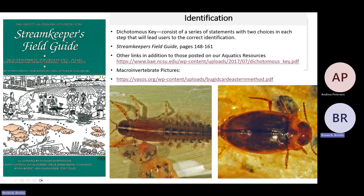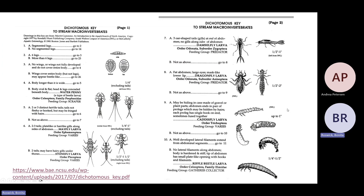Next up is identification — how we identify them. Scientists use something called a dichotomous key, which consists of a series of statements with two choices that will eventually lead you to the correct answer. There are lots of macroinvertebrate dichotomous keys out there. You can find one in the Stream Keepers Field Guide — I believe Tina has free copies of that guide. I've also included links to additional dichotomous keys, and I'll give those links to Andrea as well. On the next slide, we're going to look at a dichotomous key.